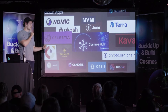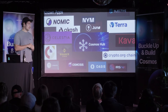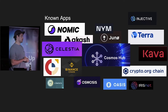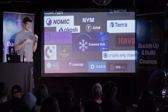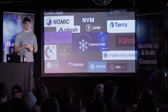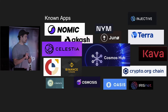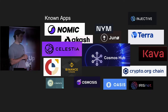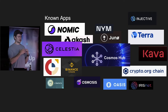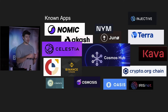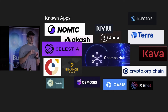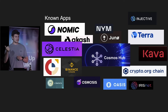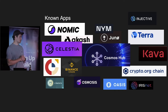Some known apps in the Cosmos ecosystem include Nomic, Akash, Celestia, the Cosmos Hub, Terra, Juno, and Injective — and the list keeps growing with new chains launching every week. When you're joining the Cosmos ecosystem, you're buying into a community and the support of everyone launching chains — Crypto.com, Oasis, ICF, Osmosis — all coming in and helping. That's really what you're buying into when you choose Cosmos.